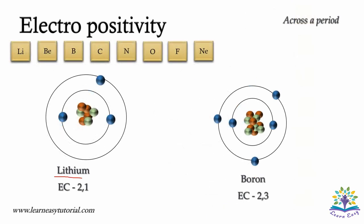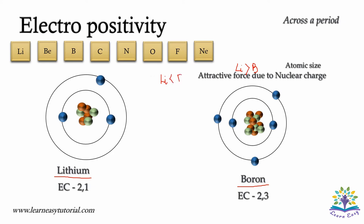Let's consider the example of lithium and boron, which belong to the same period. The atomic size of lithium is greater than that of boron. Hence, the valence electron of lithium experiences less force of attraction when compared to that of boron. Therefore, it is easier for lithium to lose its valence electron and become a positively charged ion. In other words, the electropositivity of lithium is greater than that of boron. Hence, across a period, the electropositivity decreases.